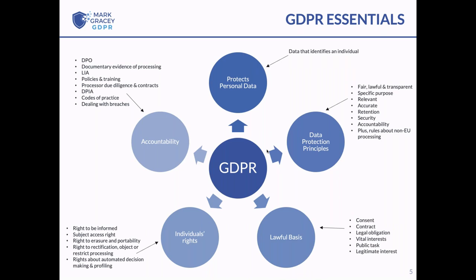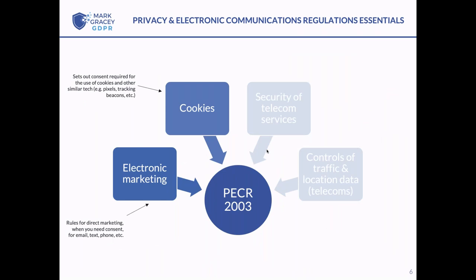Let's move on to the privacy regulations. In the UK we have the Privacy and Electronic Communications Regulations of 2003. In a marketing sense, the two key things are: rules around direct marketing and when you do and don't need consent for different types of marketing, and rules around the use of cookies or similar technologies like pixels and tracking beacons — anything that enables you to track an individual or store information about their behaviour.